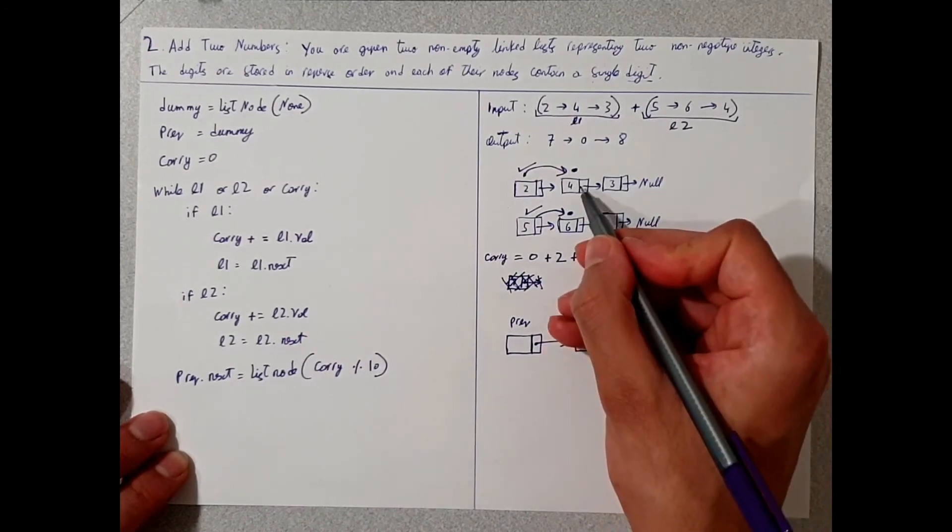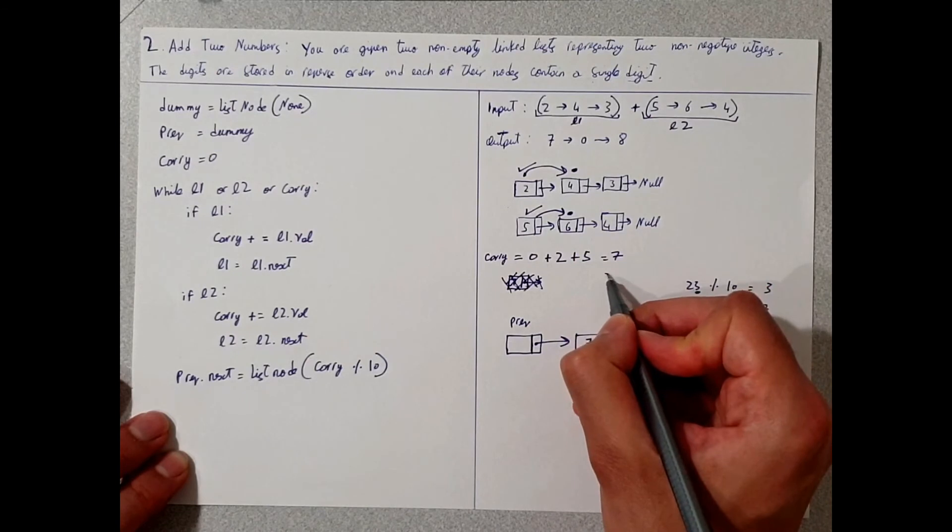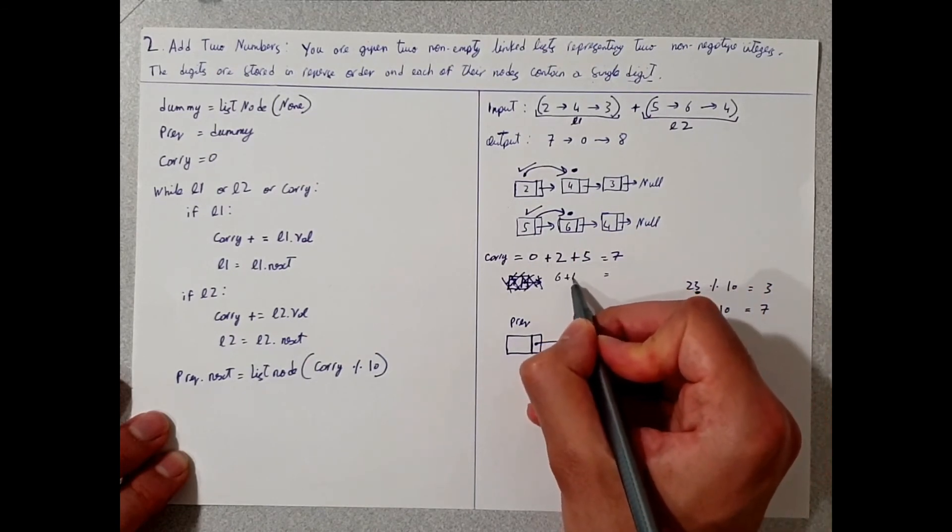So this becomes apparent, or the usefulness of this part here kicks in in the next part. If we do 6 plus 4, that will give us, in this case, so 6 plus 4 will give us 10.